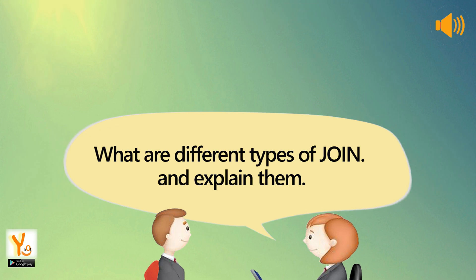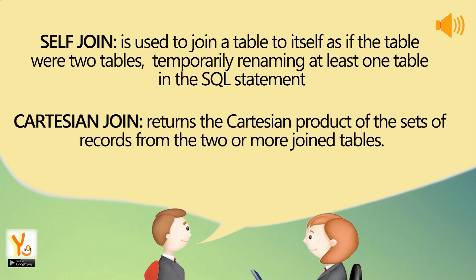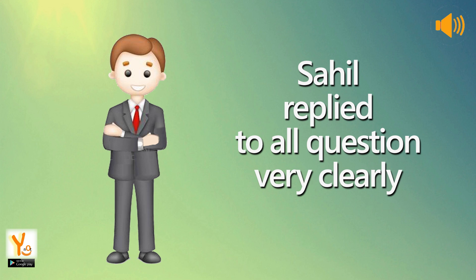What are the different types of joins? Inner join returns rows when there is a match in both tables. Left join returns all rows from the left table even if there are no matches in the right table. Right join returns all rows from the right table even if there are no matches in the left table. Full join returns rows when there is a match in one of the tables. Self join joins a table to itself, temporarily renaming at least one table. Cartesian join returns the Cartesian product of the sets of records from two or more joined tables. Sahil replied to all questions very clearly.